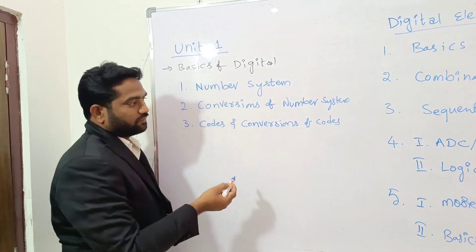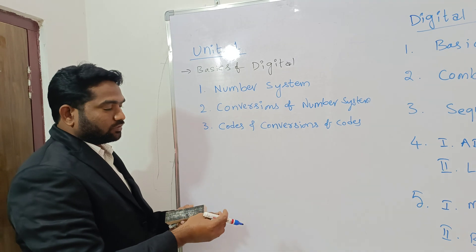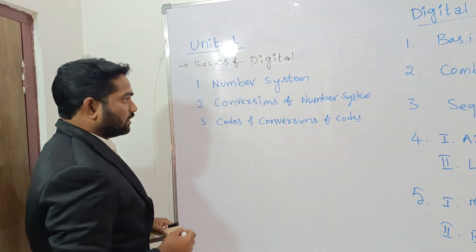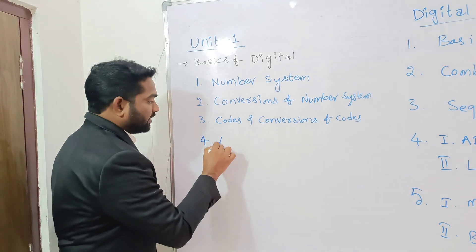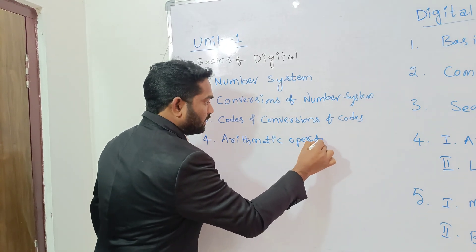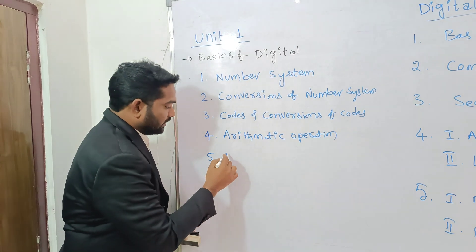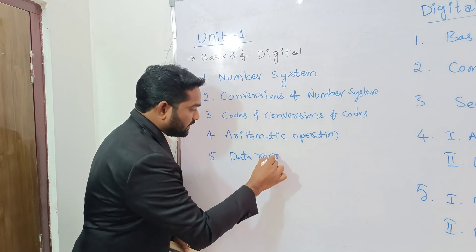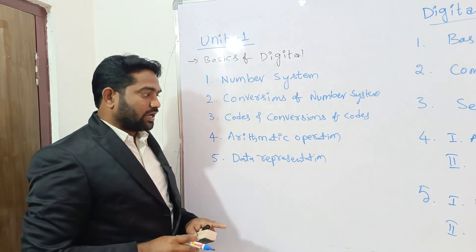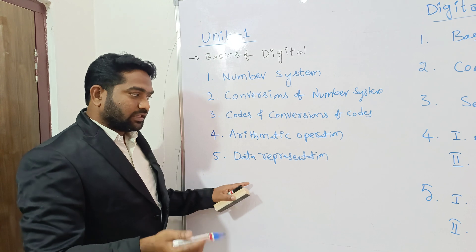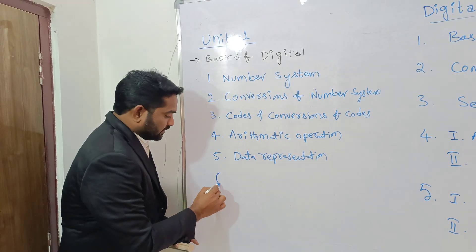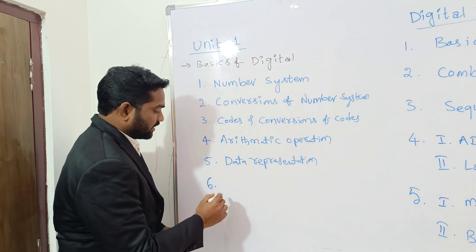The third part is Codes, and the fourth part is Conversions of Codes — for example, how to convert Excess-3 code to BCD code and BCD code to binary code. The fifth concept is Arithmetic Operations, and the sixth point is Data Representation, which covers Sign-Magnitude representation and Complement representation, including one's complement and two's complement.